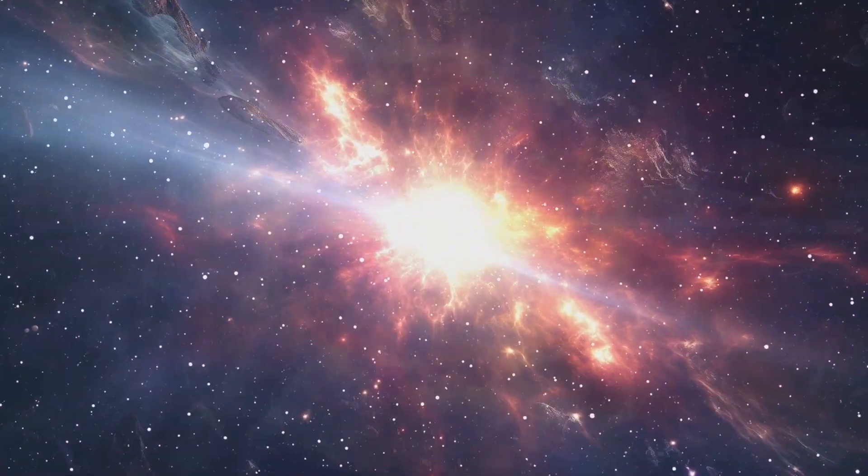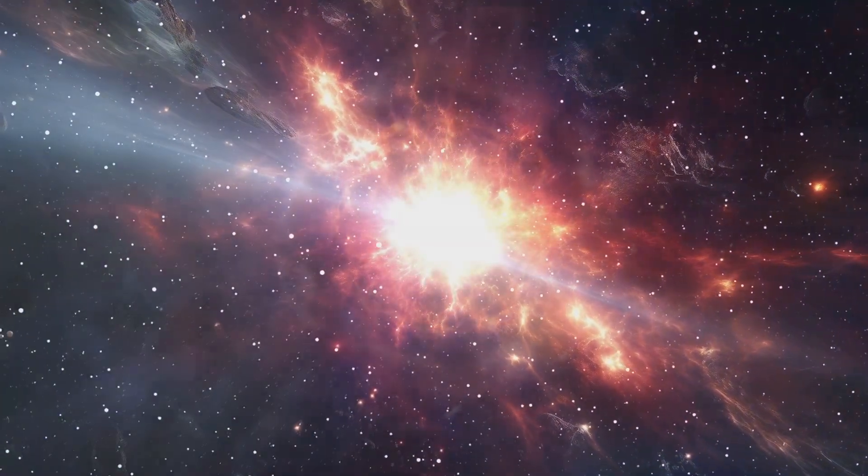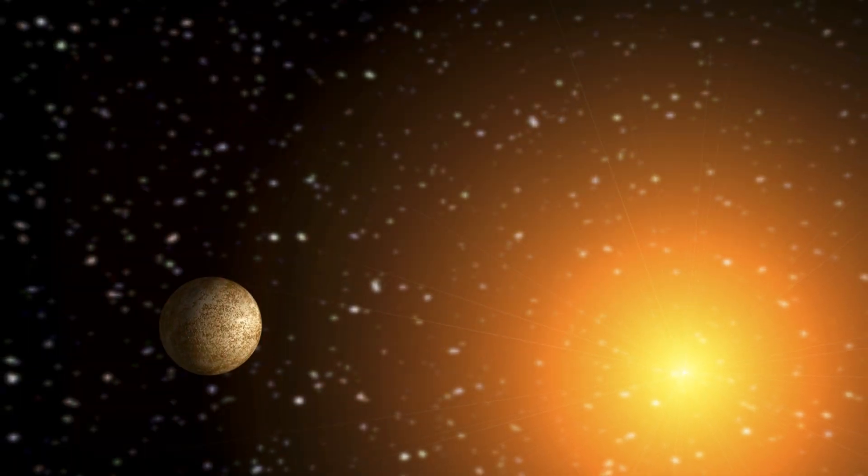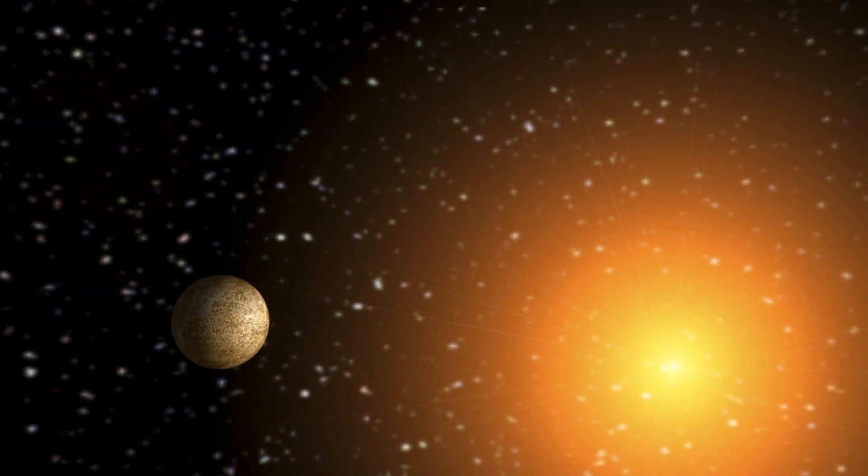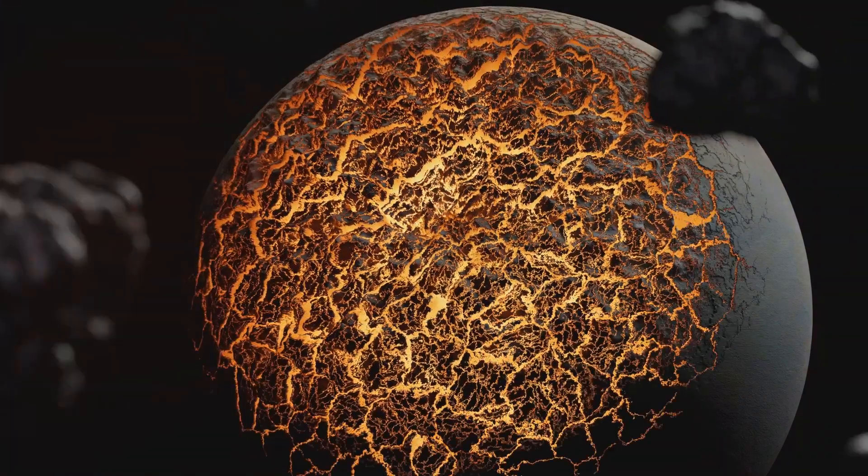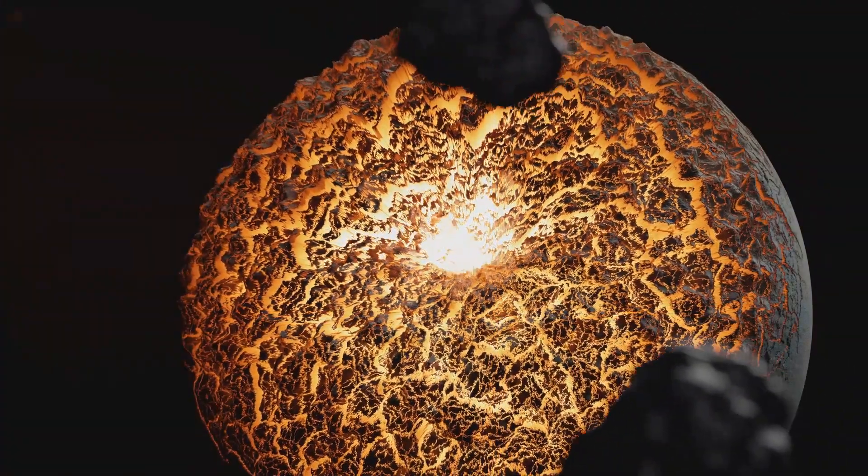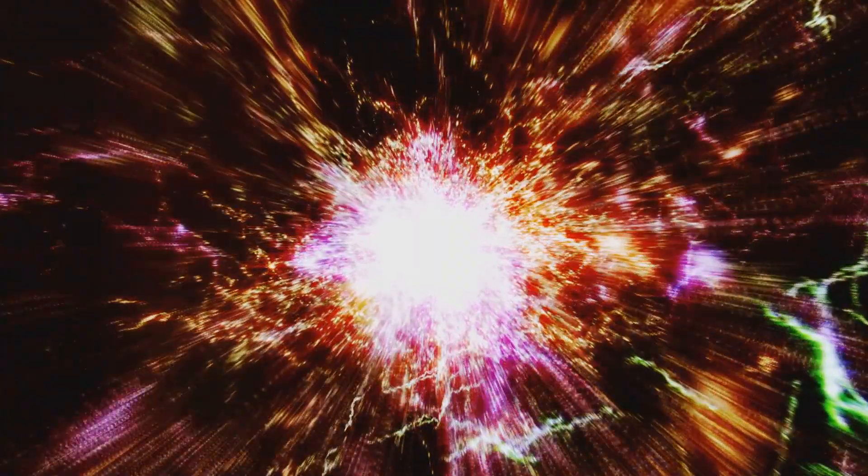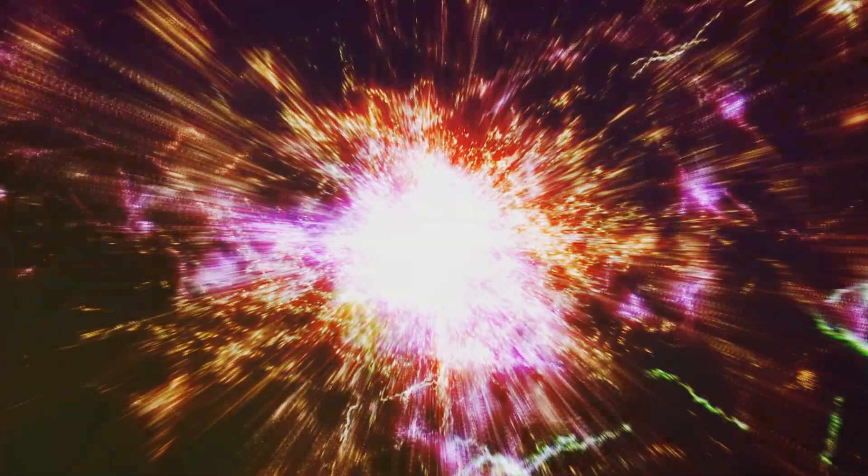Massive stars live fast and die young. They burn through their nuclear fuel much faster than their smaller counterparts. As a massive star nears the end of its life, it has layered itself like an onion, with progressively heavier elements closer to its core. The core, composed mostly of iron, can no longer sustain nuclear fusion. Without the outward pressure of fusion to counteract gravity, the core collapses in on itself in a fraction of a second.